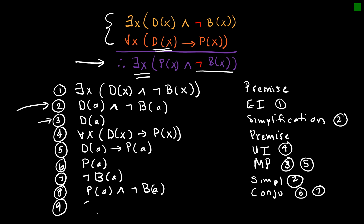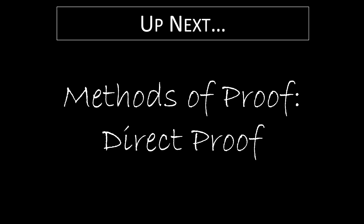Finally, step nine: I just showed that for A that statement is true, so now I can say there exists some x such that P(x) and not B(x) is true — and that's existential generalization from step eight. Hopefully you were able to follow all of those steps. My best advice is practice, practice, practice. Choose odd questions from your textbook, look at the answers in the back, and just see how you did.